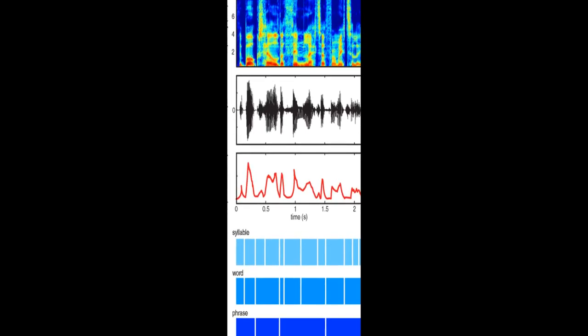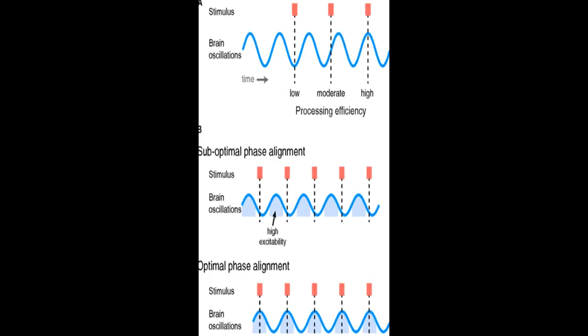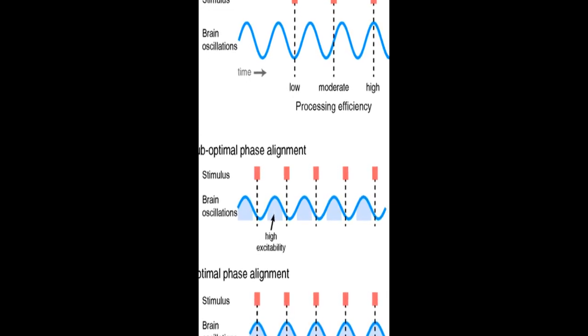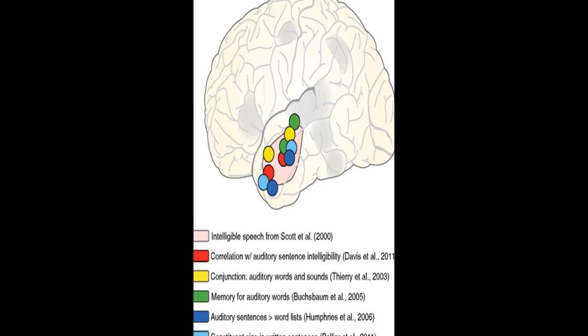Neuroimaging data shows that ongoing cortical oscillations phase lock to low-frequency information, 4 to 8 Hz, in the speech envelope, which helps increase sensitivity to relevant acoustic cues.